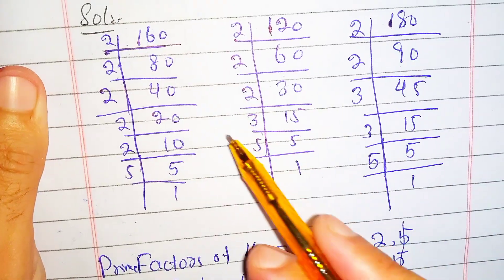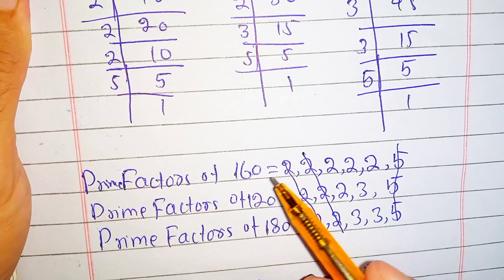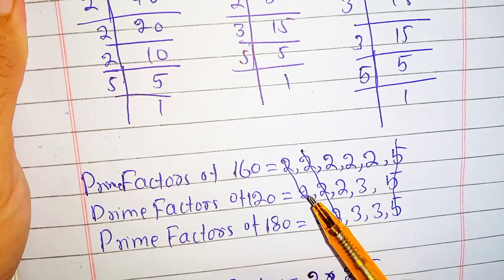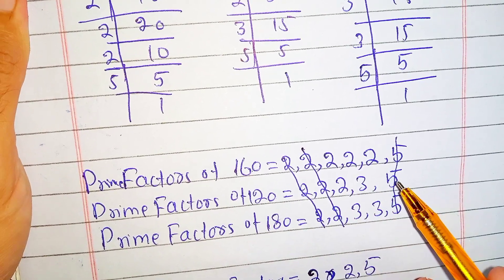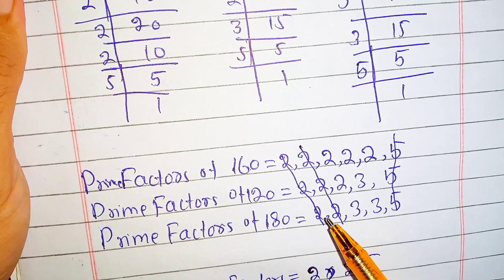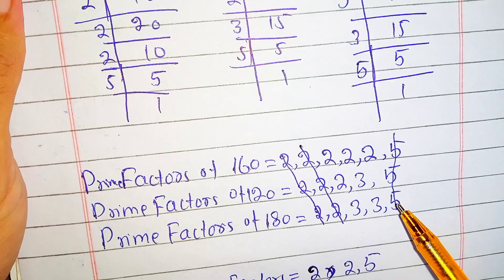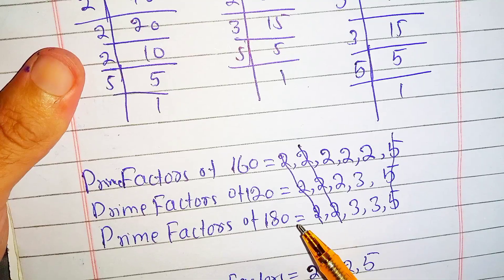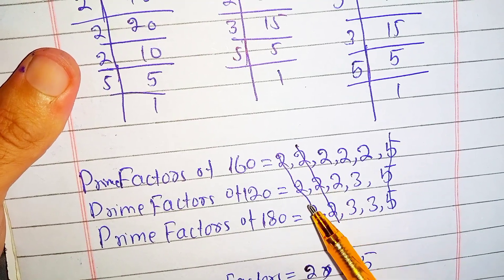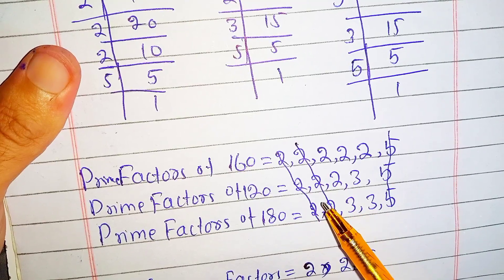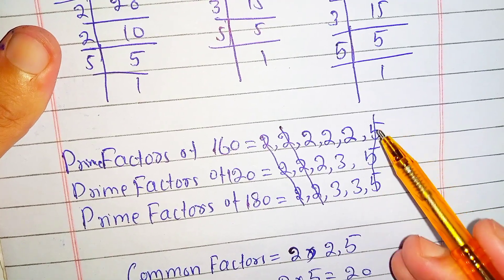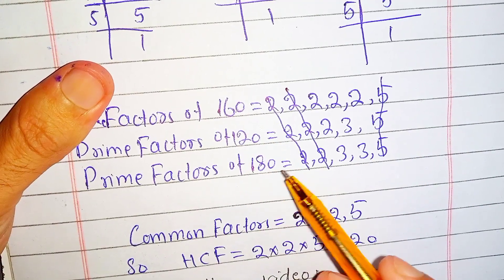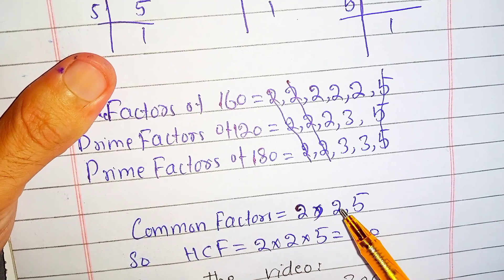So the prime factors of 160 are 2, 2, 2, 2, 2, and 5. The prime factors of 120 are 2, 2, 2, 3, and 5. The prime factors of 180 are 2, 2, 3, 3, and 5. Now we find the common factors of 160, 120, and 180. The first 2 is common in all three numbers, the second 2 is also common, and 5 is also common. So the common factors are 2, 2, and 5.